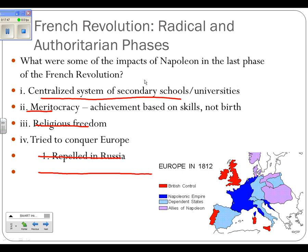Napoleon keeps the system of secondary schools and universities — he's a big supporter of public education. The radicals believed everybody should have an opportunity for an education, not just the rich. Number two, he keeps the concept of a meritocracy — a system based upon merit, your achievements and skills, not your birth. Number three, religious freedom — the church is not going to be able to tell you what to do, you can worship whatever you want, and the church was subject to taxes.